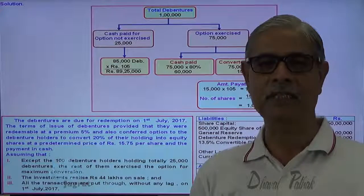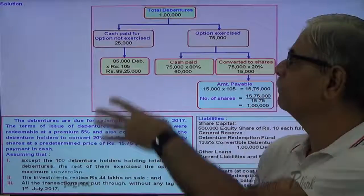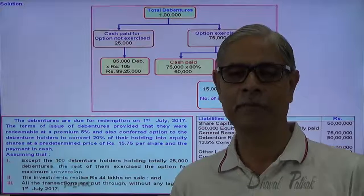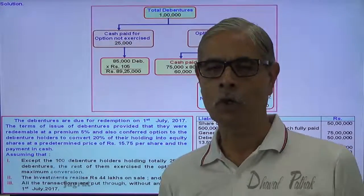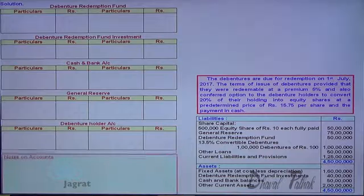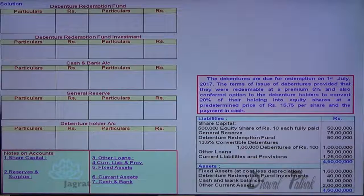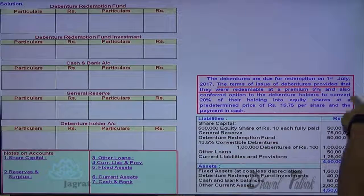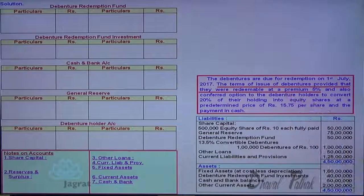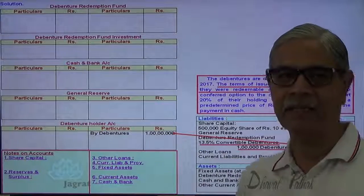So I have demonstrated the working note showing how many equity shares are given in conversion and how much cash is paid. Now I will use this working note while solving the sum. These are the various accounts I intend to prepare. Since I am required to draft the balance sheet, I prepare notes on accounts. First, the debentures of 100 lakhs are transferred: debentures account debit, debenture holders account credit, so debenture holders account is credited with 100 lakhs.